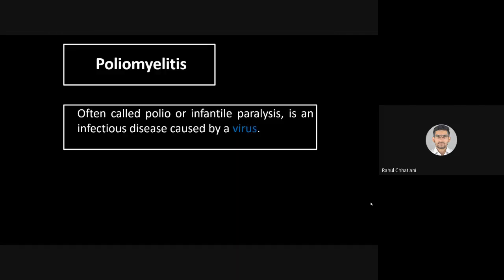What is poliomyelitis? It is often called polio or infantile paralysis — 'infantile' means newborn. When a newborn is getting paralyzed because of a viral infection caused by the poliovirus, that is termed poliomyelitis. It is an infectious disease caused by a virus, meaning it can be transmitted from one individual to another, similar to COVID.